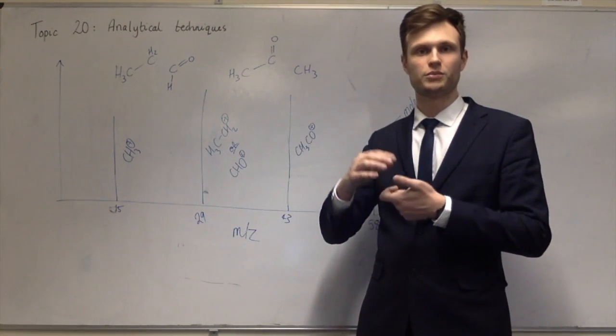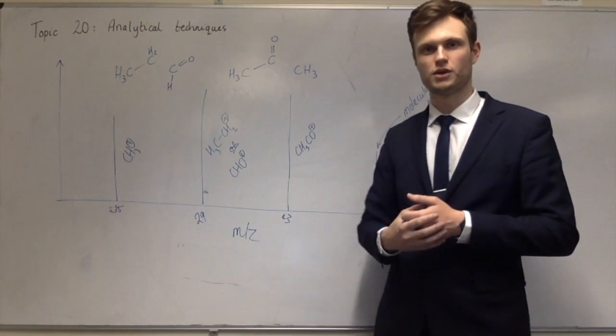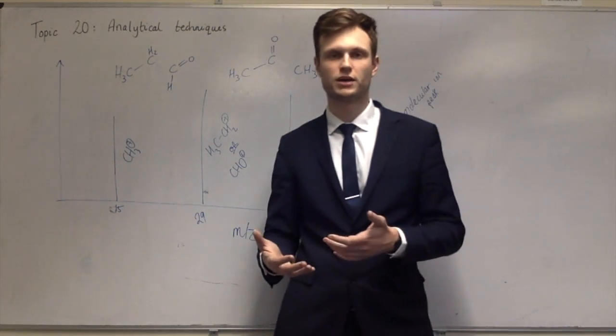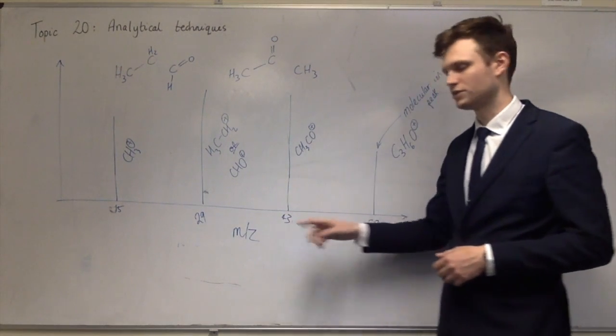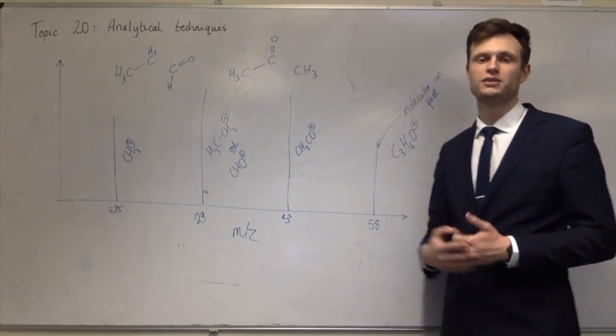or one carbon, one hydrogen, one oxygen. So you can just do a little bit of trial and error to work out which atoms you can add together to make 29, or which atoms you can add together to make 43.